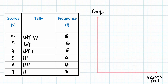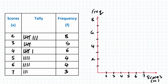We know the smallest score is two, so we write: two, three, four, five, six, seven. The highest frequency is eight, so I mark the vertical axis: one, two, three, four, five, six, seven, eight. Just made it.